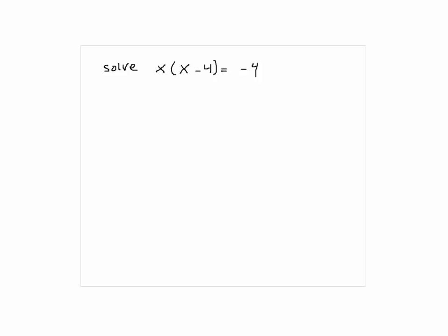Who wanted to go next? I can go. This is Shannon. You distribute the X. You get x squared minus 4x equal to minus 4.